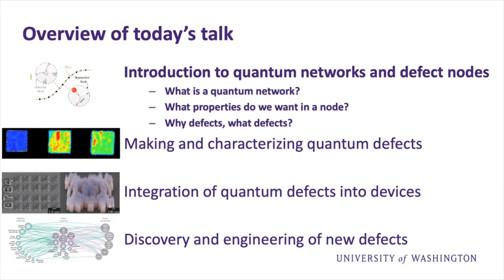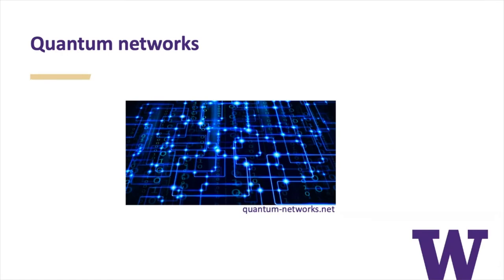In this introduction, I want to address what is a quantum network, what properties do we want in a node, and why defects and what defects. If you search 'quantum network' on the internet, you'll see something like the picture I'm showing here, where there are nodes that are bright and linked by light. This is an artist's rendition of what a quantum network might look like.